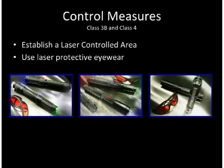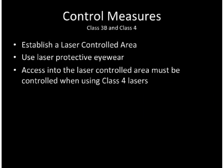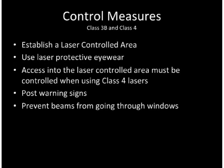Laser protective eyewear should be worn by anyone in the laser controlled area when Class 3B lasers are operated, and must be worn by persons within the laser controlled area when Class 4 lasers are operated. Wicked Lasers provides laser protective eyewear rated for use with specific models of their Class 4 laser products. Eyewear must be labeled with the protection it provides. Different countries have different requirements, so you should contact a laser safety eyewear provider familiar with the requirements in your location. Post warning signs at the entrance to laser controlled areas and prevent the possibility of the beam going through a window.